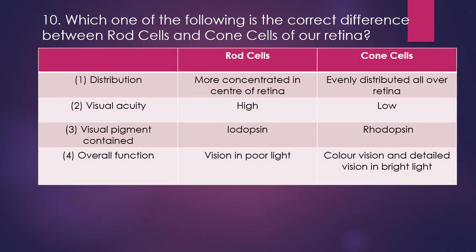Question number ten: which one of the following correctly states the difference between rods and cones in the retina? Rods are more concentrated in the center of the retina; cones are evenly distributed. Visual acuity of rods is high; cones is low. Visual pigment in rods is iodopsin and in cones is rhodopsin. Rods function in poor light; cones in colored and detailed vision in bright light. The correct answer is option 4 — rods are for vision in poor light and cones are for color vision and detailed vision in bright light. Options 1, 2, and 3 are incorrect because rhodopsin is the pigment rods contain, visual acuity of rods is lower than cones, and rods are distributed equally over the retina while cones are concentrated in the center.